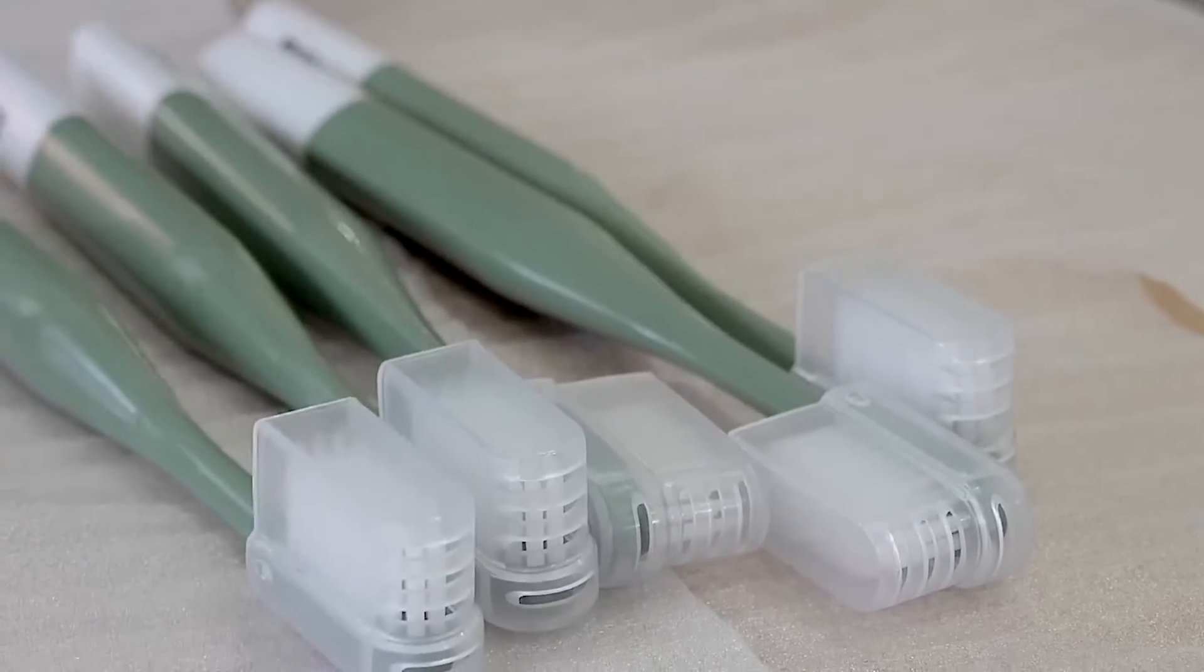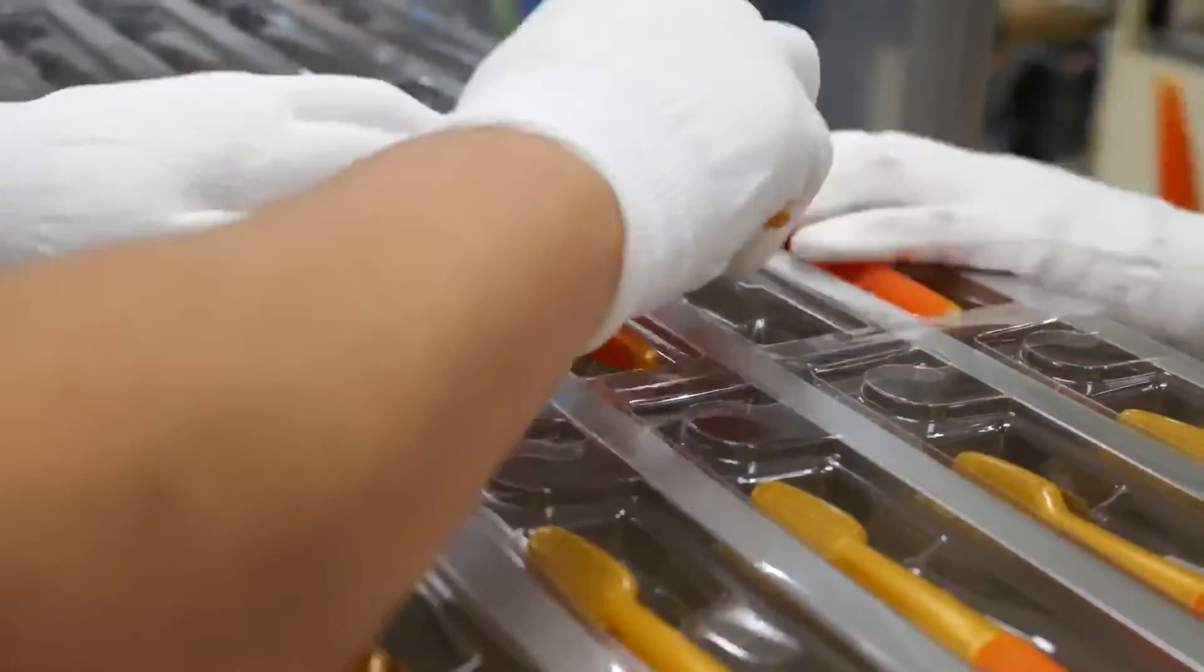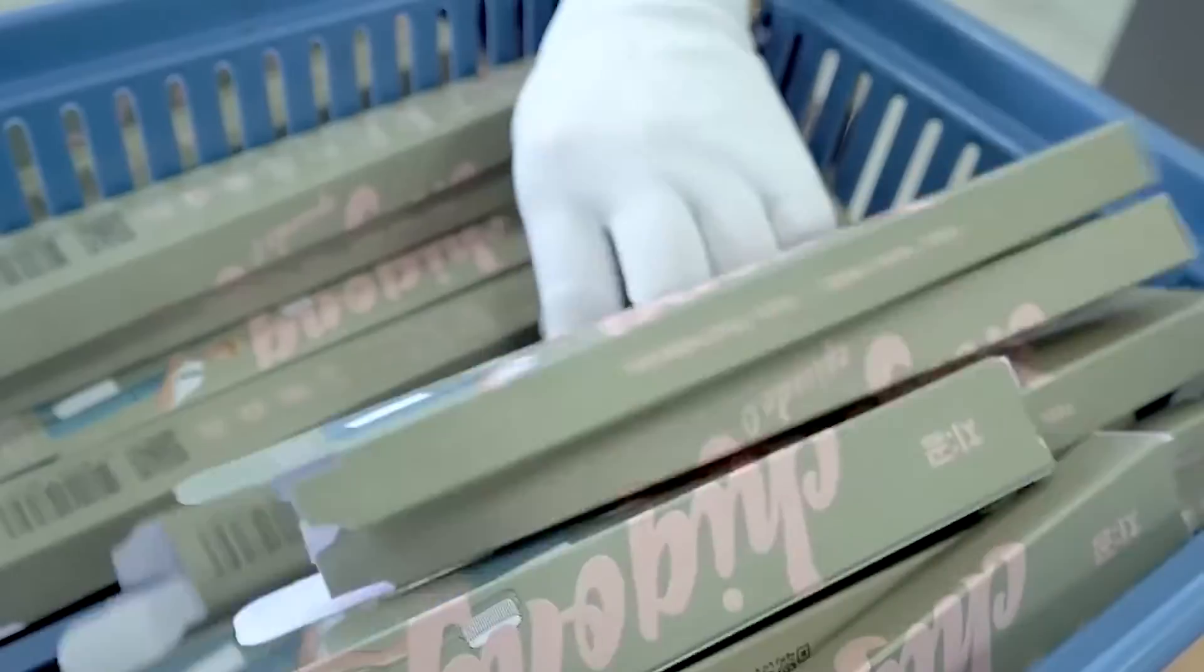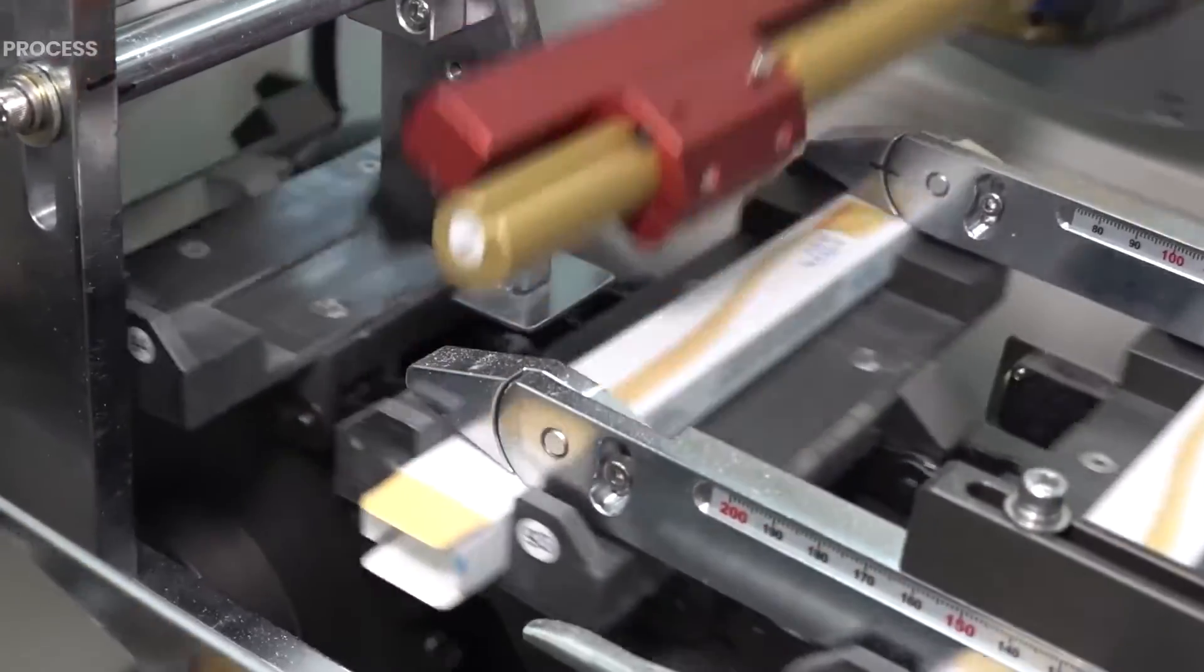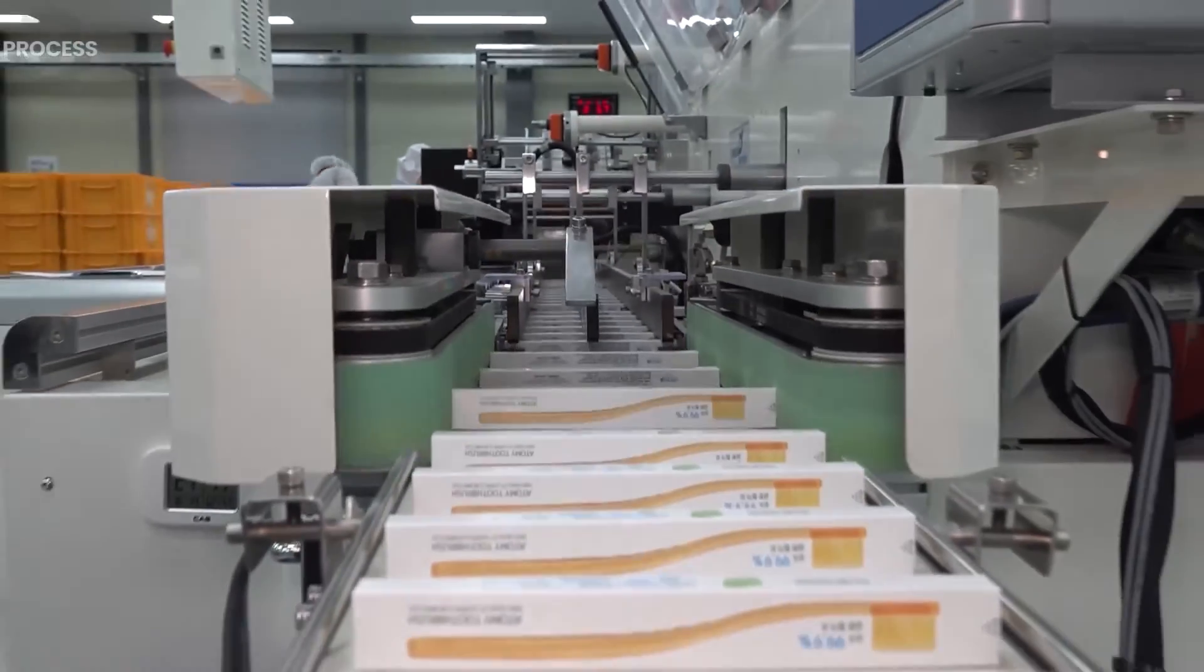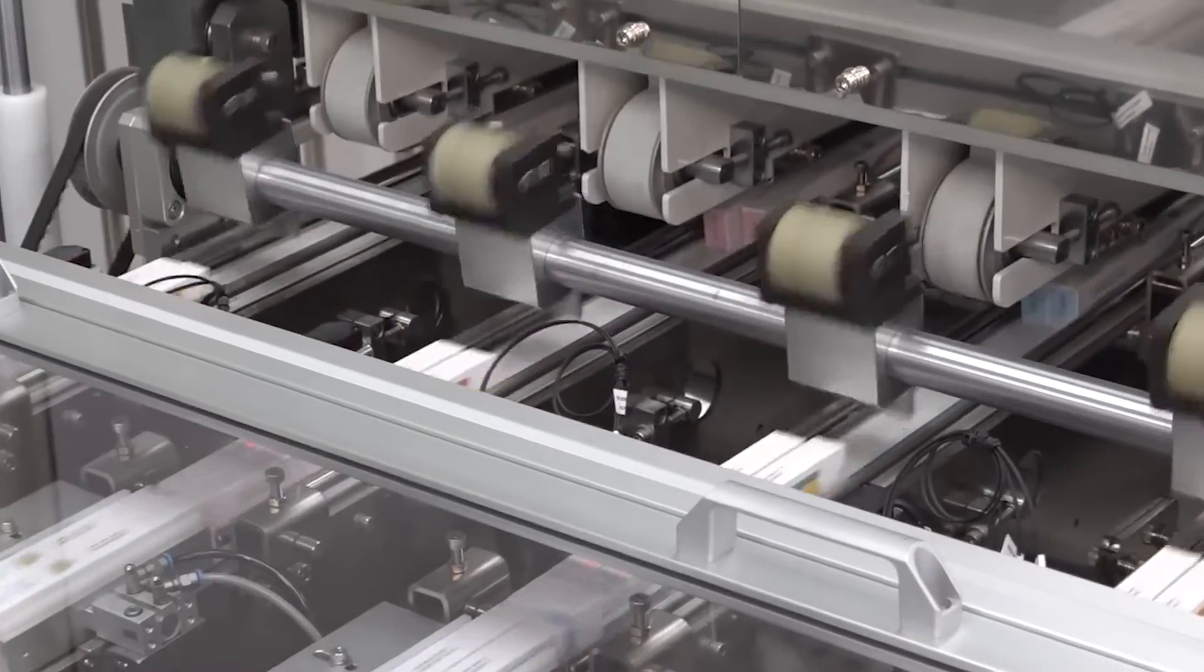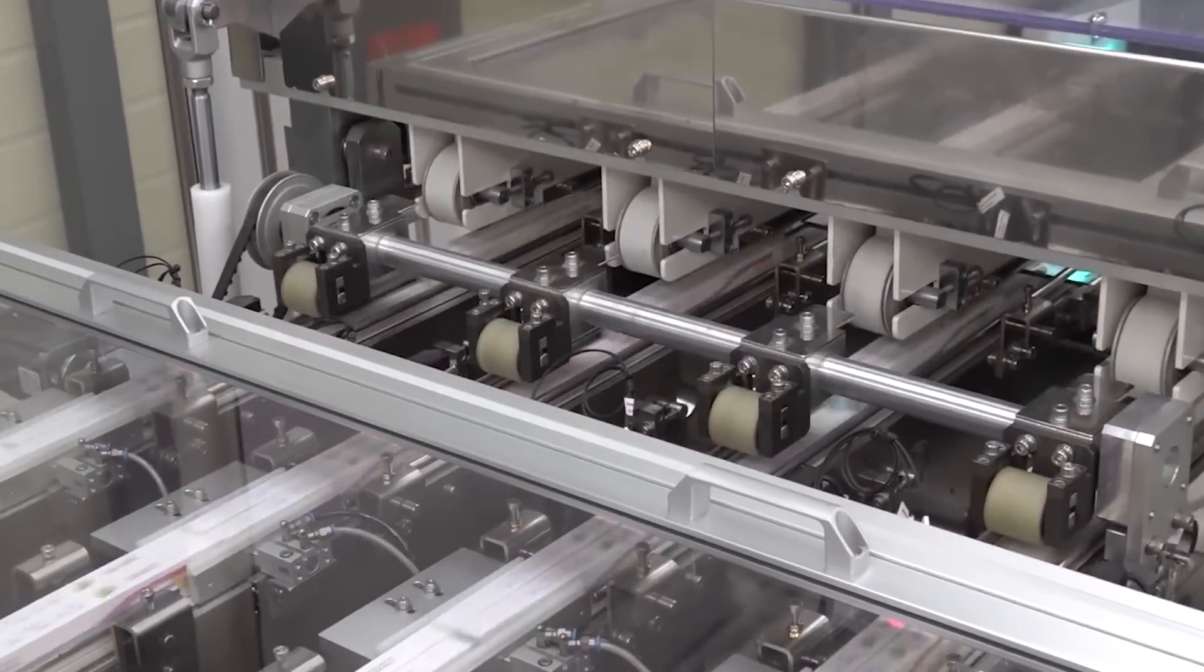Once the toothbrushes pass quality control, they move on to the packaging phase. Toothbrushes are typically packaged in individual blister packs or cardboard boxes. The packaging is designed not only for protection but also for marketing purposes, as it often includes branding, product information, and usage instructions. If the brand is approved by the American Dental Association, the seal of acceptance is also stamped on the container.